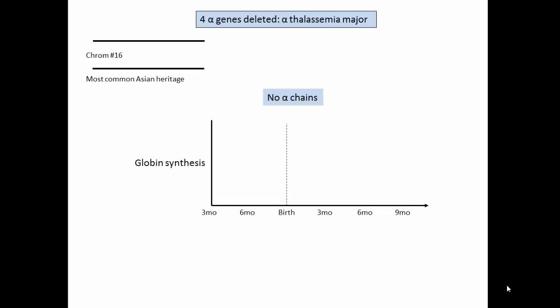Reviewing globin synthesis during fetal development, remember that normally alpha chains are produced fairly early in fetal life and consistently thereafter. Primitive embryonic alpha-like chains, not shown here, are produced transiently during very early embryonic development.